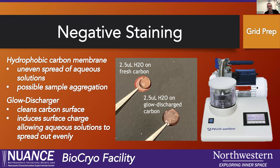We have three of these glow dischargers in Nuance — one in Tech, one in Hogan, and one here in Silverman. This is our Pelco Easy Glow glow discharger. If you don't glow discharge your grids, the carbon membranes are very hydrophobic. When you drop cast your sample onto them, they bead up, don't spread out evenly, and you can end up with aggregations of your sample and completely empty areas of your grid. This process only takes about two minutes. It's not on NuCore — it's free to use — and it can really make a difference in your data.